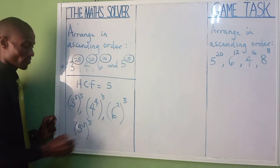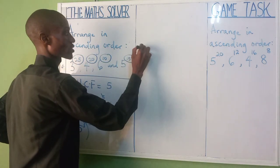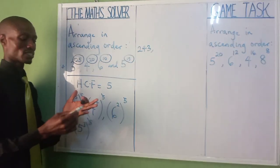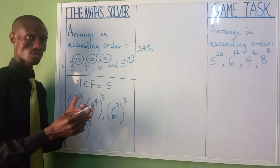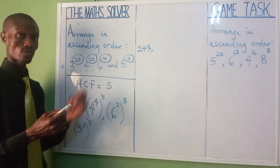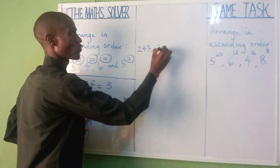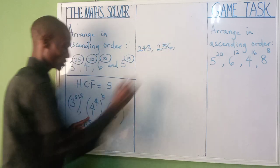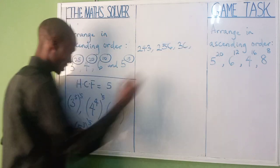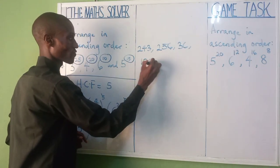Now we compute the inner values. Three raised to the power of five: three times three is nine, nine times three is twenty-seven, twenty-seven times three is eighty-one, eighty-one times three is two hundred and forty-three. Four raised to the power of four is two hundred and fifty-six. Six raised to the power of two is thirty-six. Five raised to the power of three is one hundred and twenty-five.